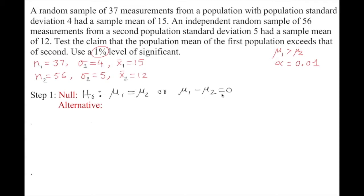In the null hypothesis, we assume the claim is not true and they are equal. For the alternative hypothesis Hₐ, we say population mean 1 is greater than population mean 2, or equivalently, μ₁ minus μ₂ is greater than 0. This is our null and alternative hypothesis.